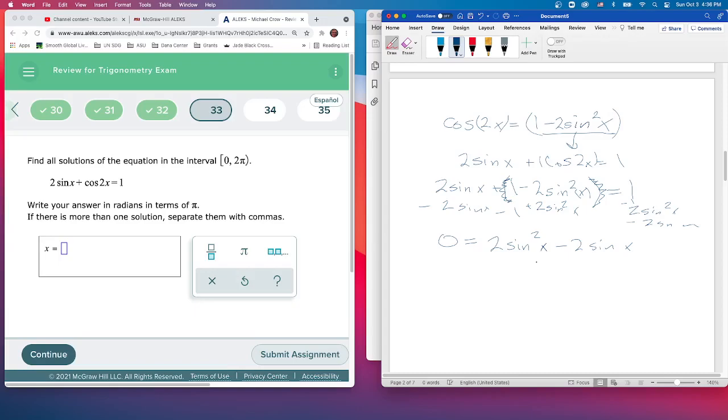This factors pretty nicely. I can take out 2 sine X, leaving 2 sine X in front, and what's left inside—since this was squared, there's a sine X left, and when this came out there's a 1 left—gives us sine X minus 1. So we have 2 sine X times (sine X minus 1) equals 0.